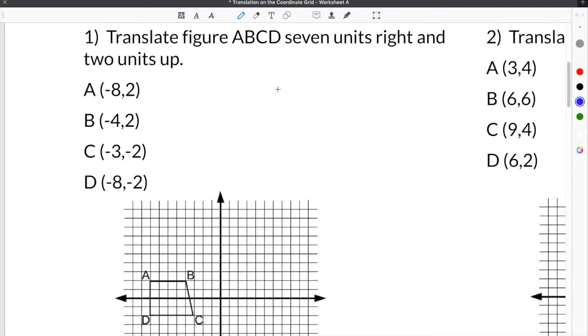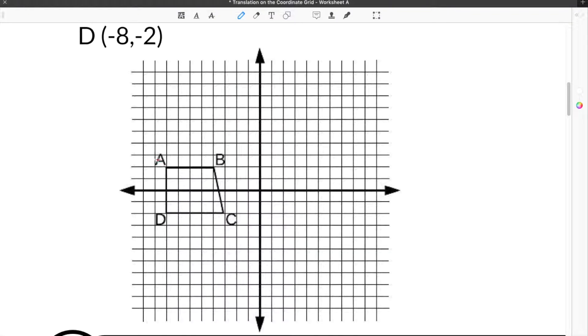The first problem on our translations and math worksheet says to translate figure ABCD seven units right and two units up. We look at our figure ABCD, and we know we have to translate seven units to the right and two units up. In order to do this, we're going to label each vertices, and we're going to count seven to the right and two up.